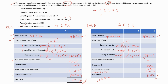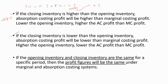The reverse relationship is also true: if the closing inventory is less than the opening inventory, the absorption costing profit will be lower than the marginal costing profit. Higher the opening inventory, lower the absorption costing profit than the marginal costing profit. This point is also really important — you have to understand these points very clearly.